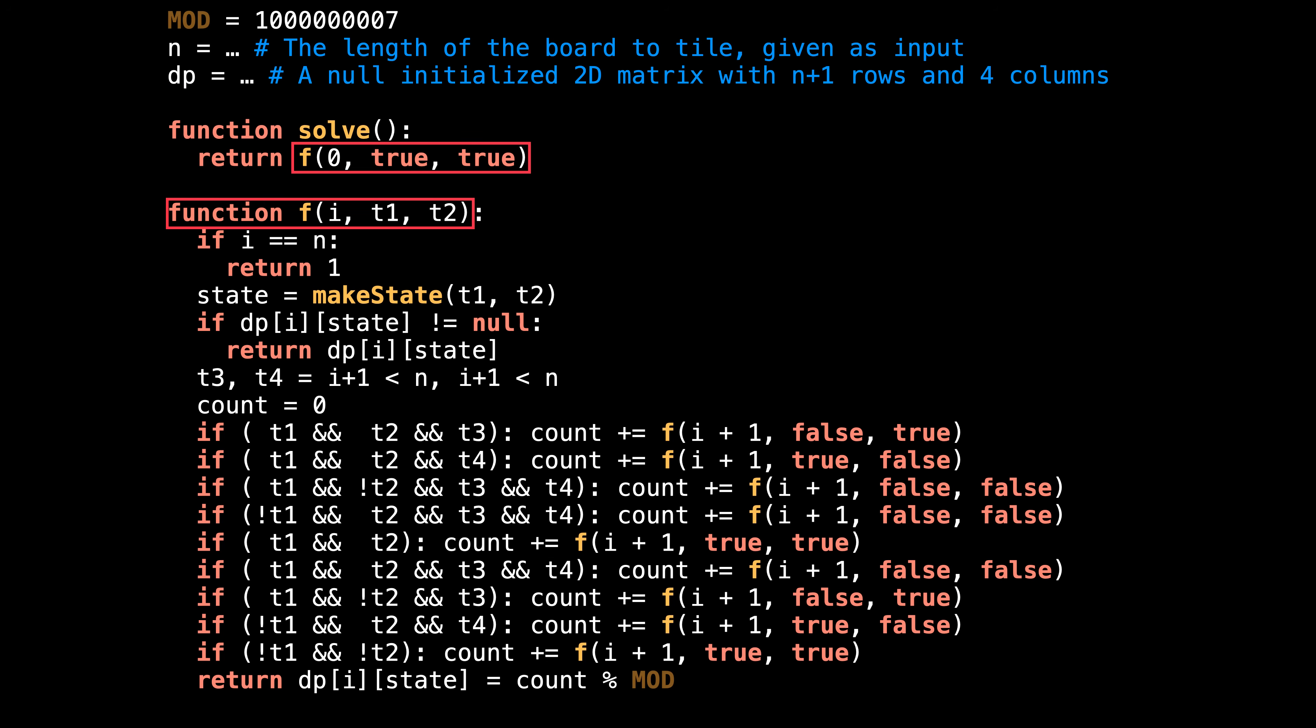Next up is the solve function, which is basically a wrapper function for calling f, the recursive function that does all the work. f itself takes three pieces of information. First, i, the index responsible for tracking how far along we've tiled the board. The goal is to find the number of complete tilings for a board of size n. Additionally, f also takes t1 and t2 as arguments, which are Boolean values which represent if tiles t1 and t2 are free on the horizon. In the beginning, t1 and t2 are free to be tiled, which is why I pass in true and true when calling f.